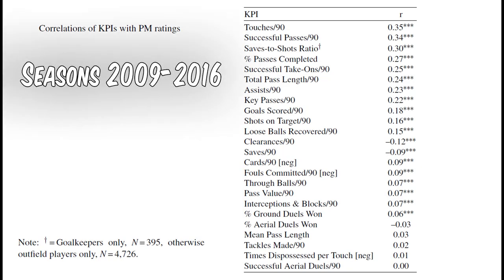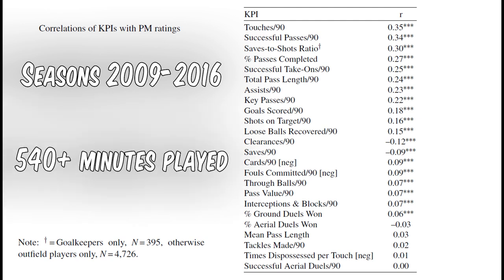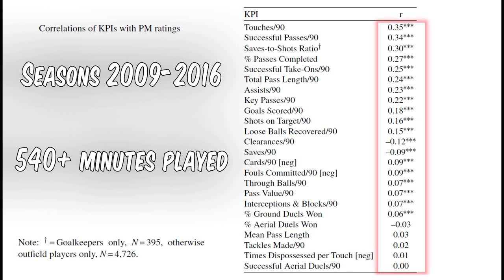We considered seasons from 2009 to 2016, including all players with at least 540 minutes of playing time. For each KPI we found the correlation between the KPI and the plus-minus ratings. Values marked with three asterisks correspond to a statistical significance level of 0.1%, meaning there is very likely a relationship between a player's plus-minus rating and the corresponding KPI. For example, if a player has more successful take-ons per 90 minutes, they are on average expected to have a higher plus-minus rating.